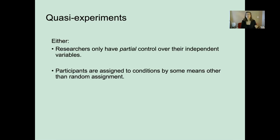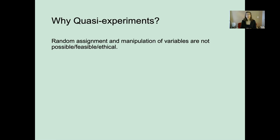Why would we ever do a study like this if it's not good according to experimental standards? It sounds like it would be kind of lazy, right? We can't figure out a causal relationship if we didn't manipulate an independent variable and assign our participants randomly to groups. But there are actually legitimate reasons why we would do these — sometimes random assignment and manipulation of variables may not be possible, practical, or ethical for us to do.